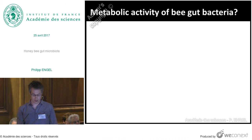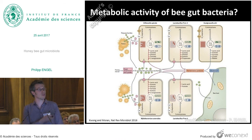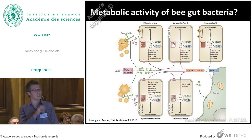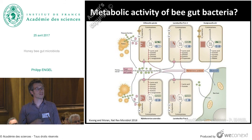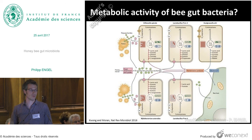So what do we know about the metabolism of honeybee gut bacteria? This is a review published last year by Nancy Moran. It's data inferred from genomic data — so there is no experimental evidence yet shown on this slide — but the main idea is that these bacteria actually degrade complex polysaccharides derived from the pollen diet of bees. They ferment these polysaccharides into short-chain fatty acids, which can then be utilized by other gut bacteria through cross-feeding, as well as being taken up by the host.